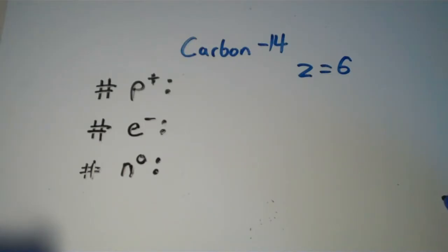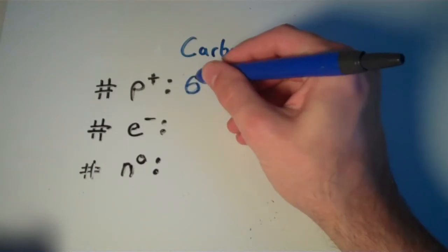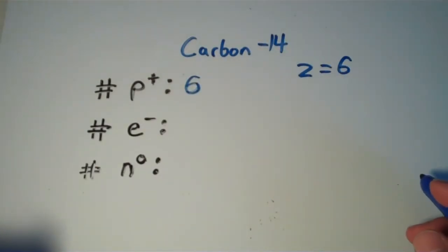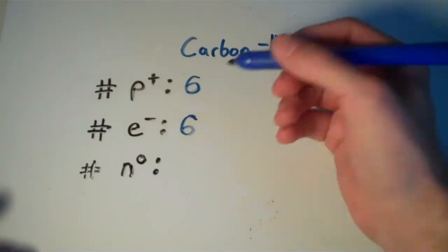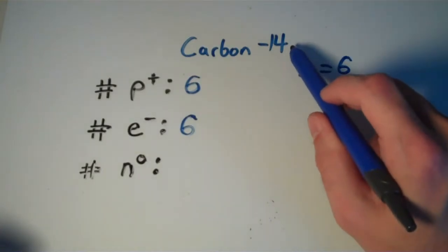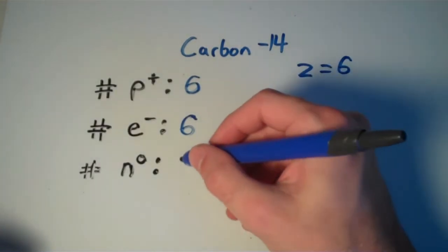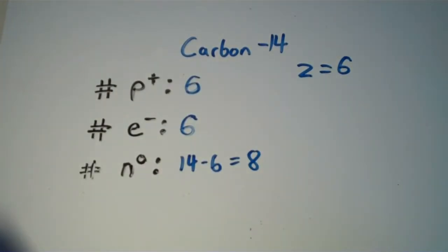So, that means that there are 6 protons in the nucleus, so we can fill that out. And since there's nothing here that indicates that there's any charge on this carbon-14 atom, we can say that the number of electrons is also 6. The number of neutrons is obtained, again, by subtracting the atomic number from the mass number. The mass number is given here, 14, so it would be 14 minus 6, or 8 neutrons.